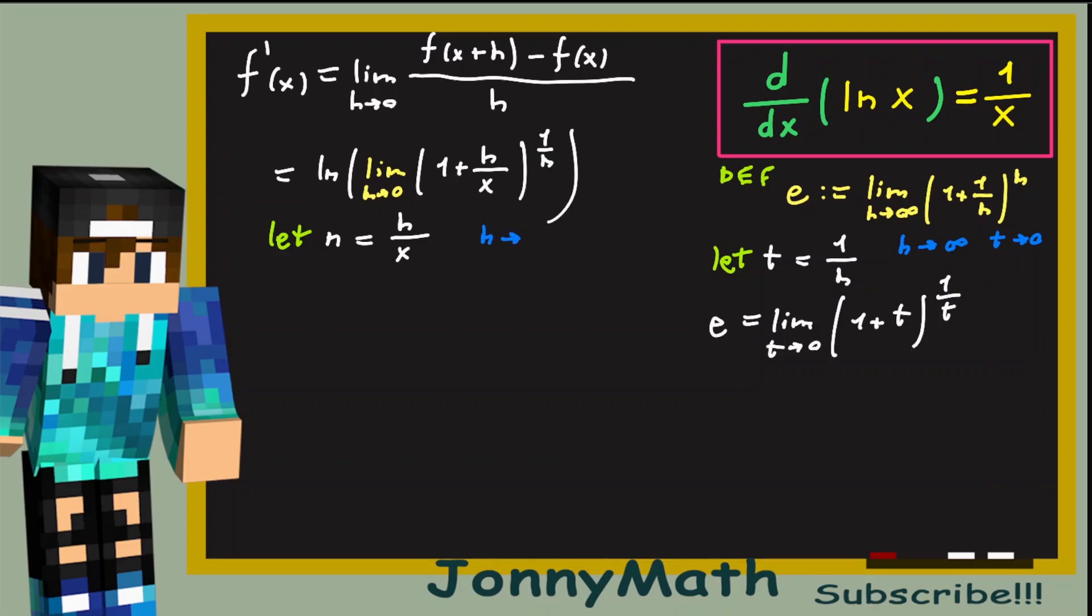Okay, so notice that as h goes to 0, n goes to 0. So, our previous limit is just the natural log of the limit as n goes to 0 of 1 plus n to the 1 over x times n power. So, this is just the natural log of the limit as n goes to 0 of 1 plus n to the 1 over n power to the 1 over x.